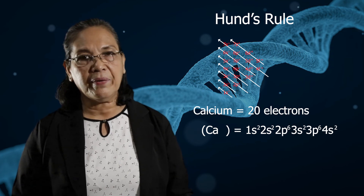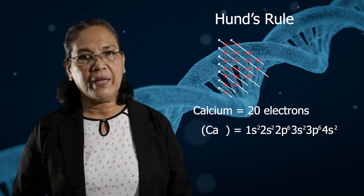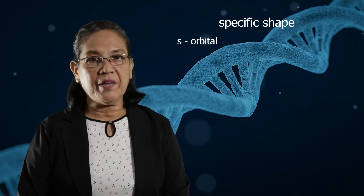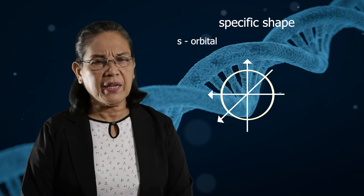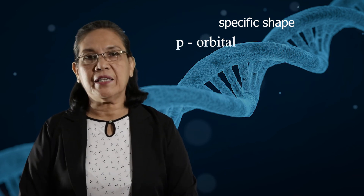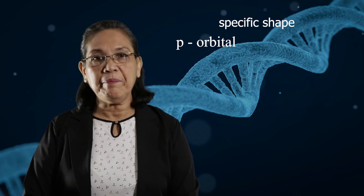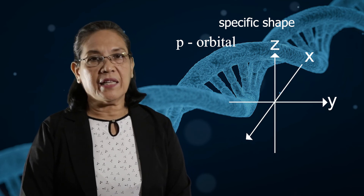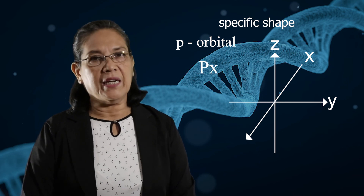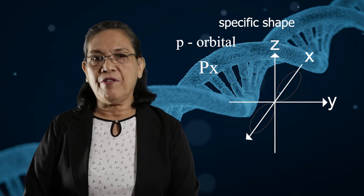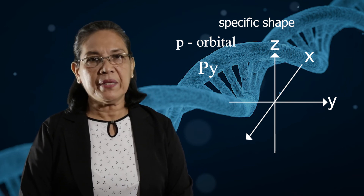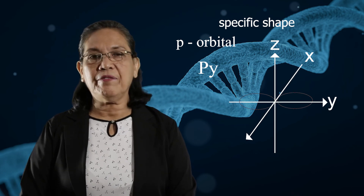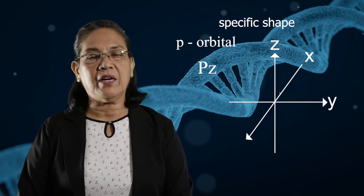Talking about the orbitals, they have specific shapes. For the s orbital, the shape is spherical — it is rounded. For the p orbital, the shape is like a dumbbell. The p orbital has a px, a py, and a pz. For the px orbital, the dumbbells lie along the x-axis. For the py orbital, the dumbbell lies on the y-axis. And for the pz orbital, the dumbbell lies on the z-axis.